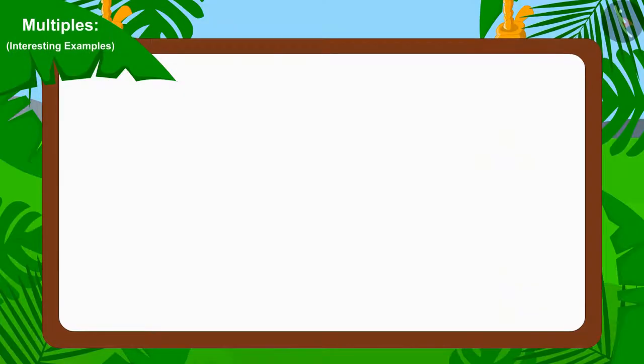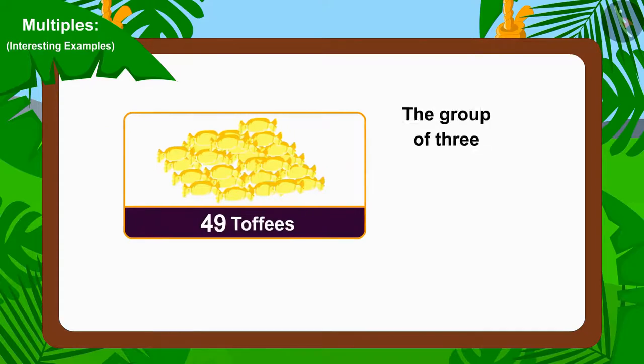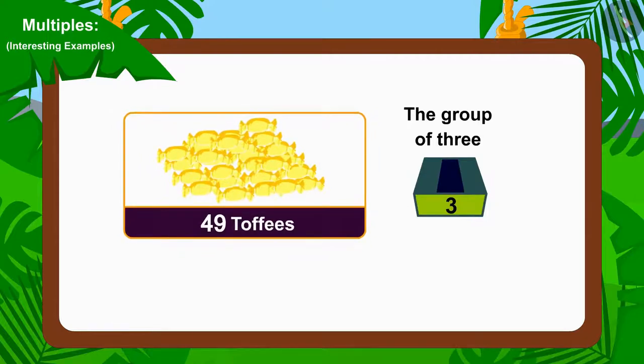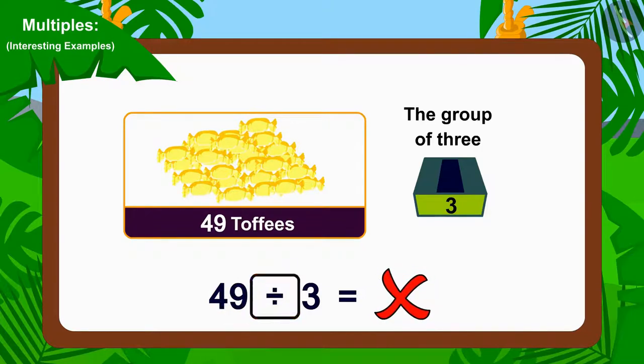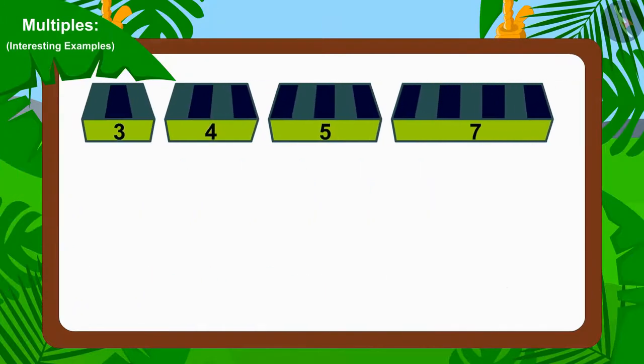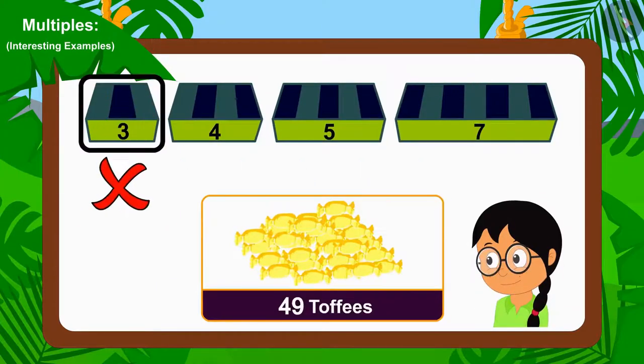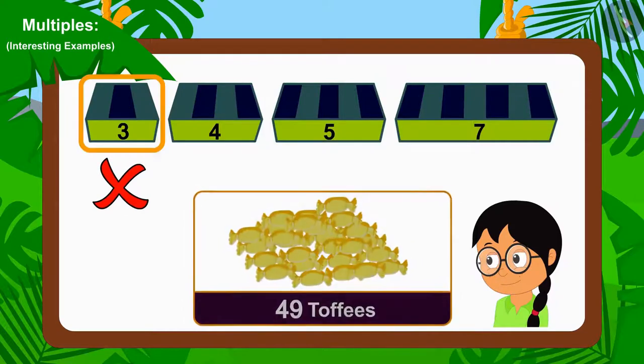Let's first try to divide these toffees into groups of 3 and see if there are any toffees left. How can we easily do this? Correct! We just have to see if we can divide 49 by 3. Can we do that? No! We cannot divide 49 by 3. Therefore, Meenu cannot use groups of 3 to distribute 49 toffees.